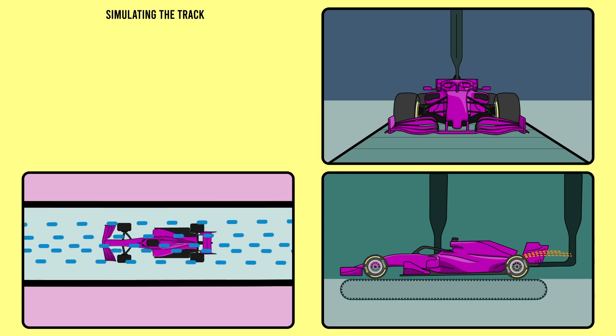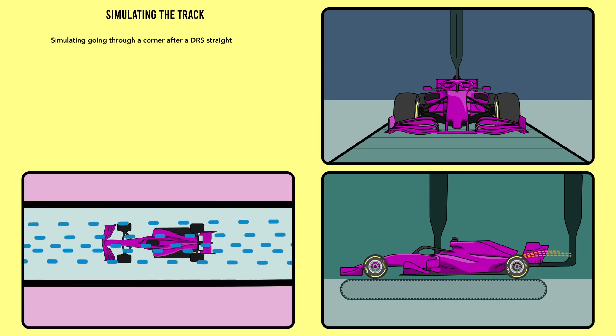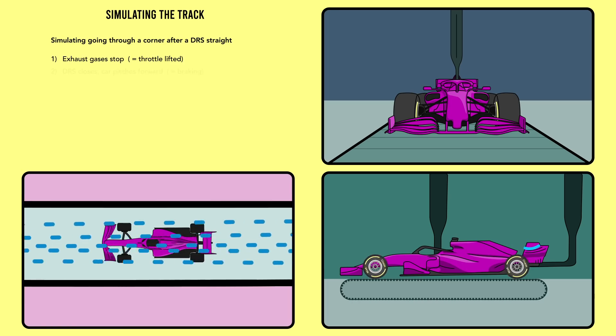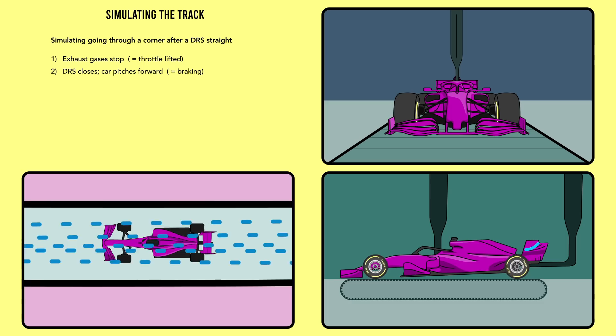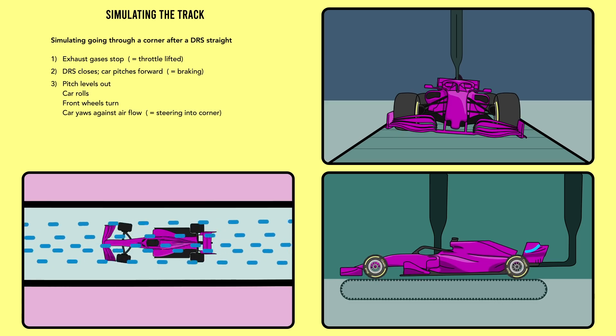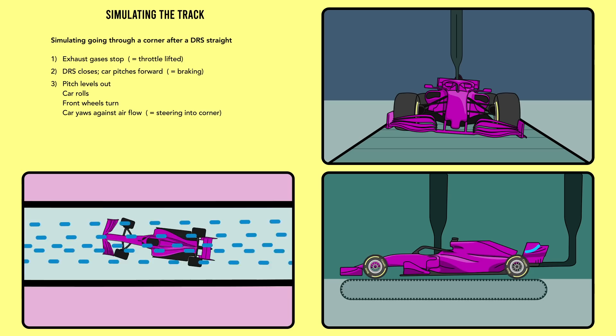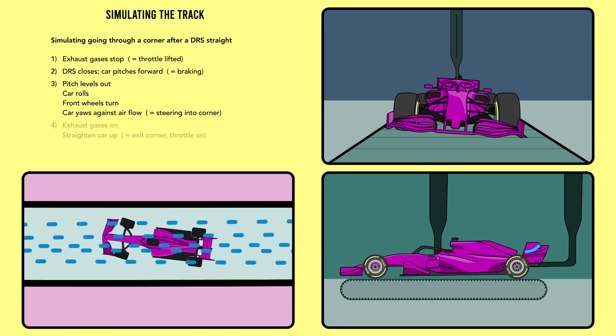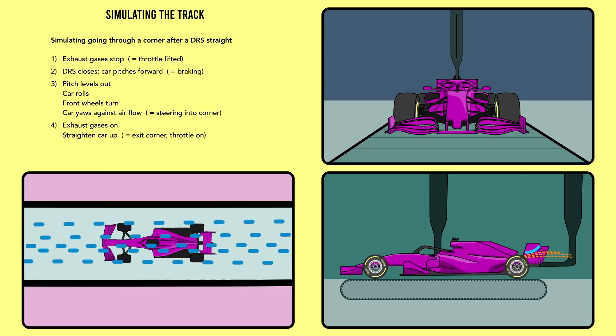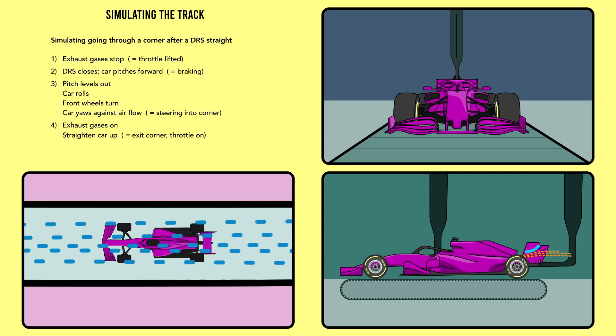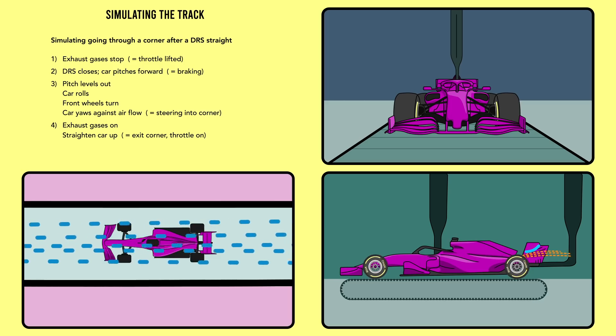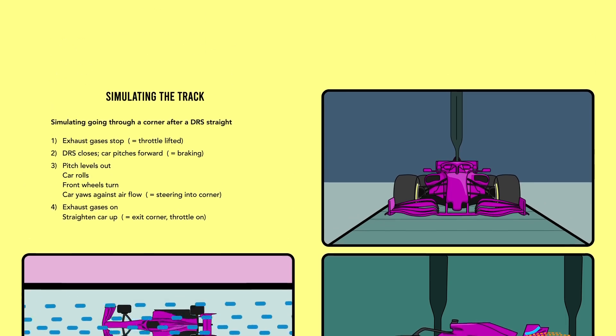Anderson in his article details an example run whereby a car from a normal position of powering down a straight with DRS open goes through a corner. So the exhaust gases would cut off as the driver cuts the throttle. The DRS would close and the car would pitch forward to simulate the brakes being hit. The pitch and roll is adjusted with the front wheel steering and some yaw added to simulate turning through a corner. And finally, they add the exhaust back in and straighten everything up to simulate getting back on the accelerator and exiting the corner. Through processes like this, they can, to various levels of fidelity, mock up a bunch of different scenarios to test how the components fare in both affecting airflow and forces across the car.